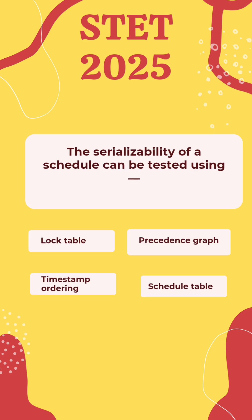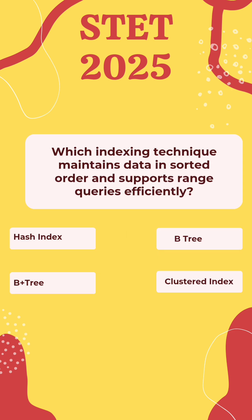The serializability of a schedule can be tested using: Locktable, Precedence Graph, Timestamp Ordering, or Schedule Table. The correct answer is Precedence Graph.